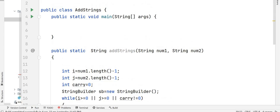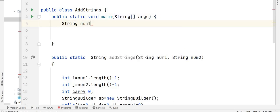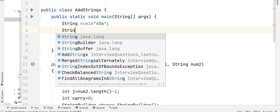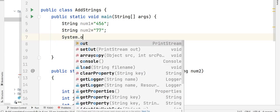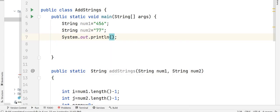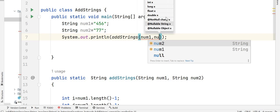Let's go back to our main function. Let's take the inputs string num1 which would be your 456 and num2 which would be your 77. Let's write our print statement.